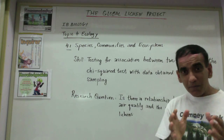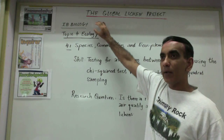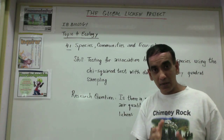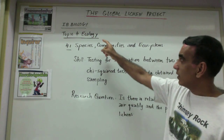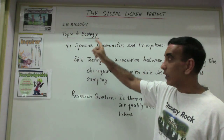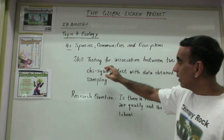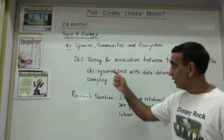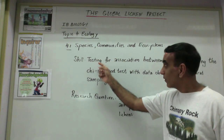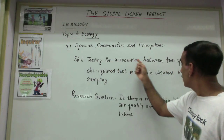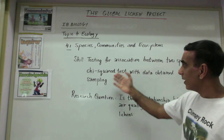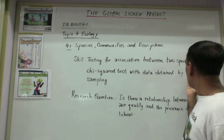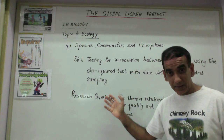It's really built out of the IB Biology curriculum for first exams in 2016, as we studied Topic 4: Ecology. We are trying to develop the skill of testing for association between two species using the chi-square test, with data obtained by quadrat sampling.